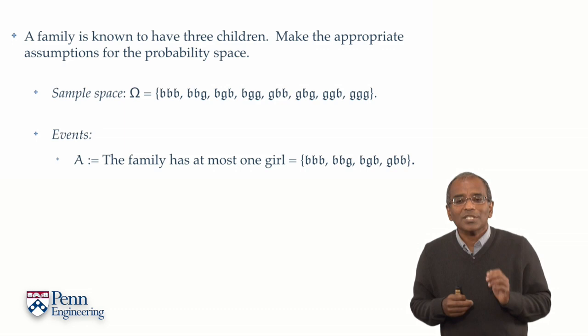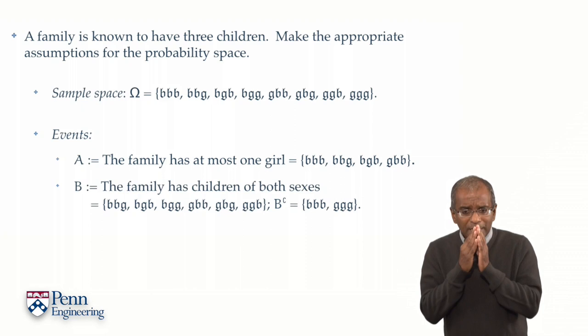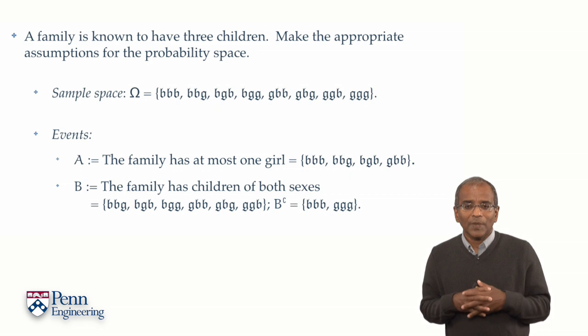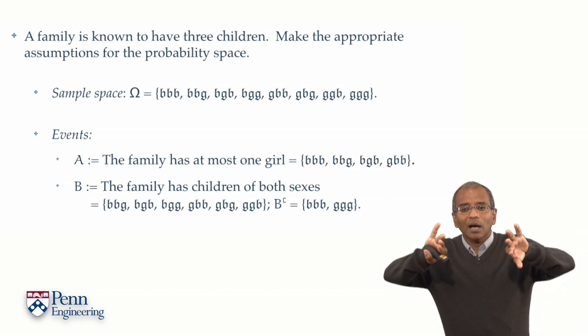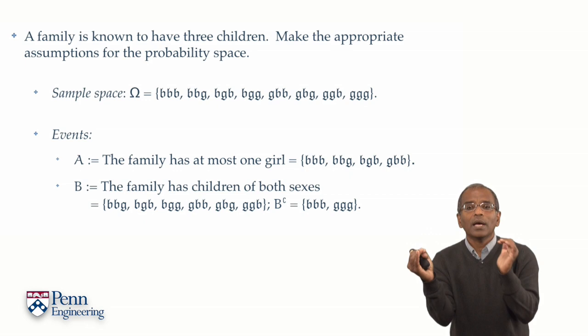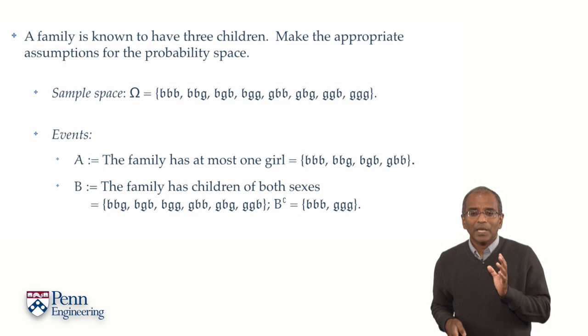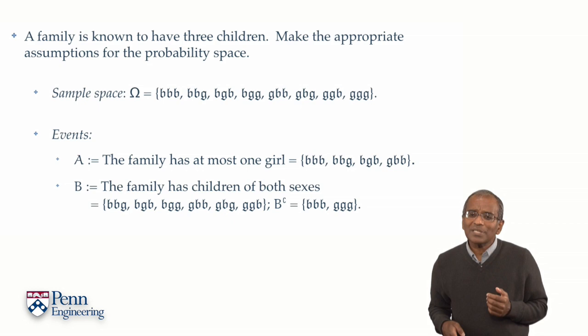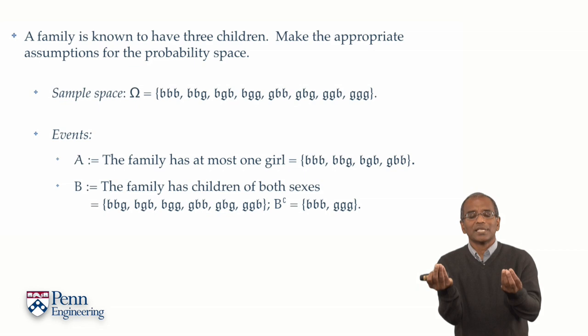Let's look at another event. Let B be the event the family has children of both sexes. This means that the bookend sample points, three boys, three girls, are eliminated. And what remains leaves you six sample points where all those triples contain at least one b and one g. It's easier in this setting to actually look at a complement of this event. What is B complement? That the family contains children of only one gender. And there are two possibilities there, all boys or all girls.